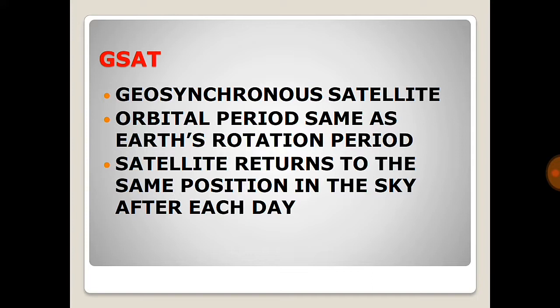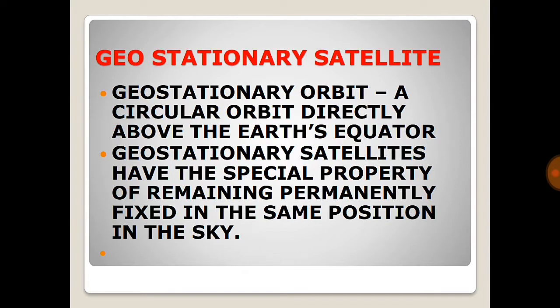A geosynchronous satellite has an orbital period the same as the Earth's rotation period. The satellite goes around the Earth with the same rotation period and returns to the same position in the sky each day. For example, if it is at position A at 12 o'clock today, it will come back to the same position at 12 o'clock tomorrow.